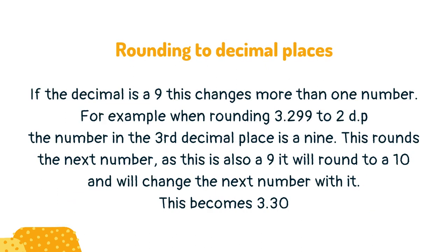If the decimal is a 9, this changes more than one number. For example, when rounding 3.299 to 2 decimal places, the number in the third decimal place is a 9. This rounds the next number. As this is also a 9, it will round to a 10 and will change the next number with it. This becomes 3.30.